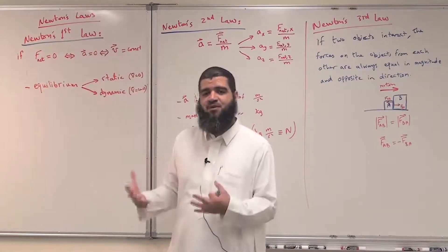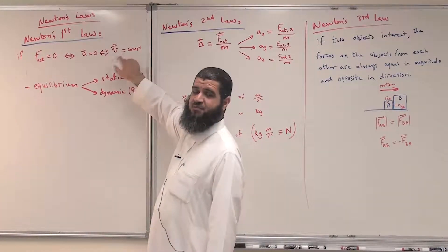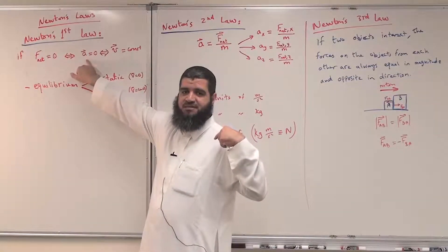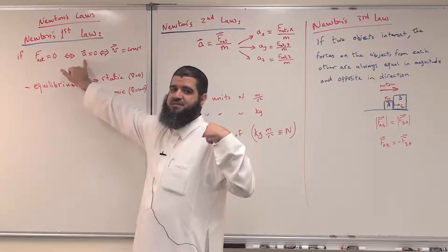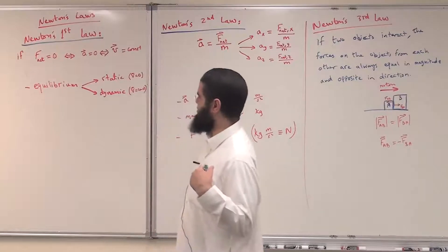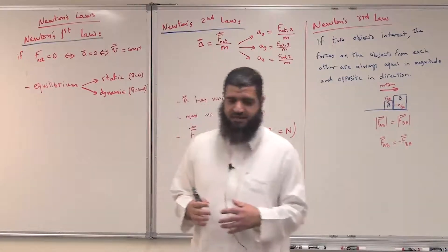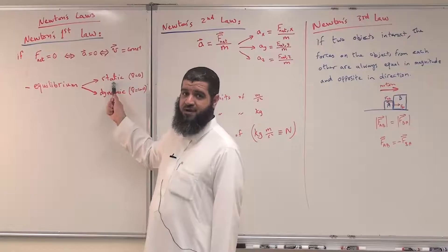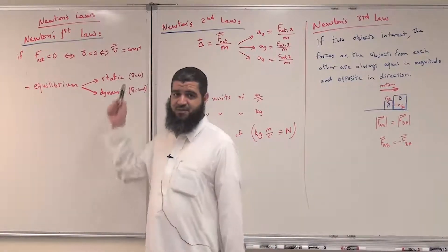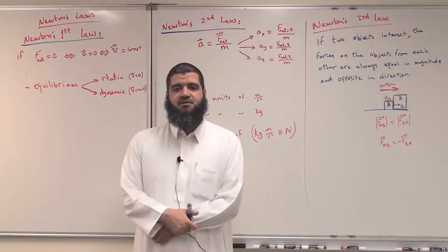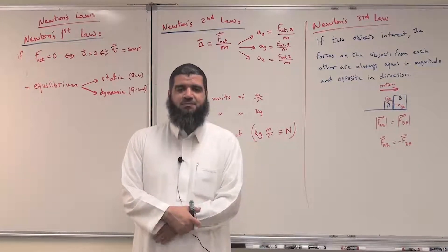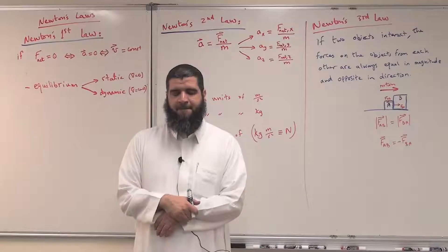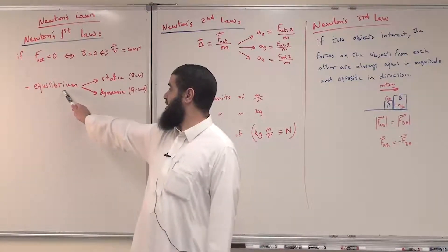If you observe an object moving with constant velocity, its acceleration is zero, and therefore the net force on it is zero. In this case we say the object is in equilibrium. This can be static equilibrium, when the object is not moving — for example, right now I am not moving, my velocity is zero, my acceleration is zero, and the net force on me is zero.